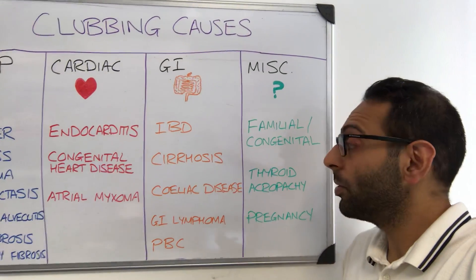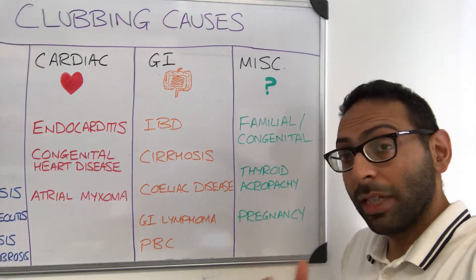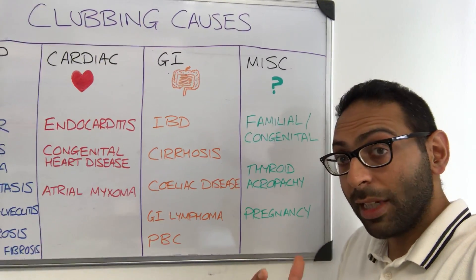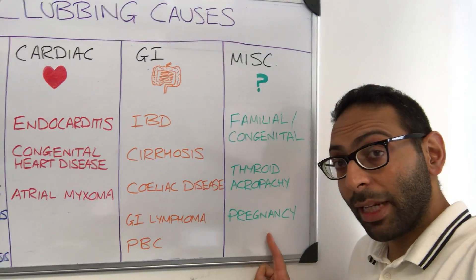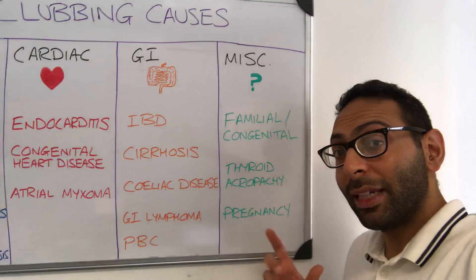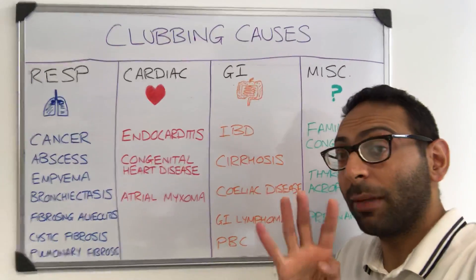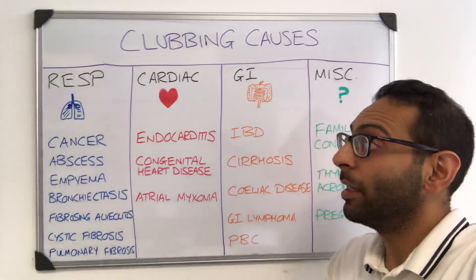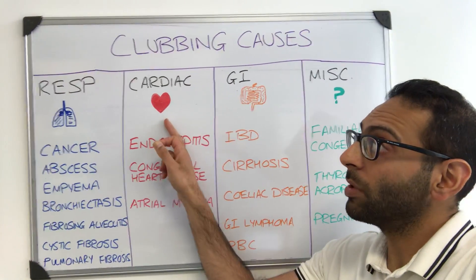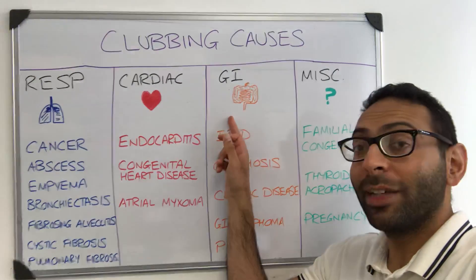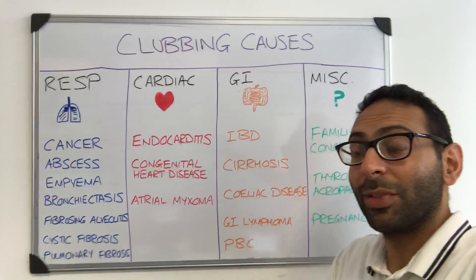Miscellaneous causes include familial or congenital clubbing — so no underlying medical cause — thyroid acropathy associated with Graves' disease, pregnancy, and other malignancies to think about as well. So, four main areas to think about for nail clubbing: lung causes, heart causes, GI causes, and miscellaneous causes.